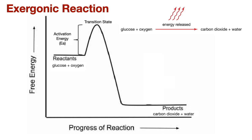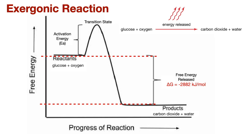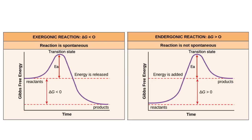In the process, the difference in free energy between the reactants and products is released by the reaction. For this course, you will need to be able to recognize an exergonic or an endergonic reaction from their energy graphs. The easiest way to do this is to look at the energy of the reactants versus the products. In exergonic reactions, the reactants have more free energy than the products. In an endergonic reaction, the reactants have less free energy than the products. Notice that both endergonic and exergonic reactions require some activation energy.